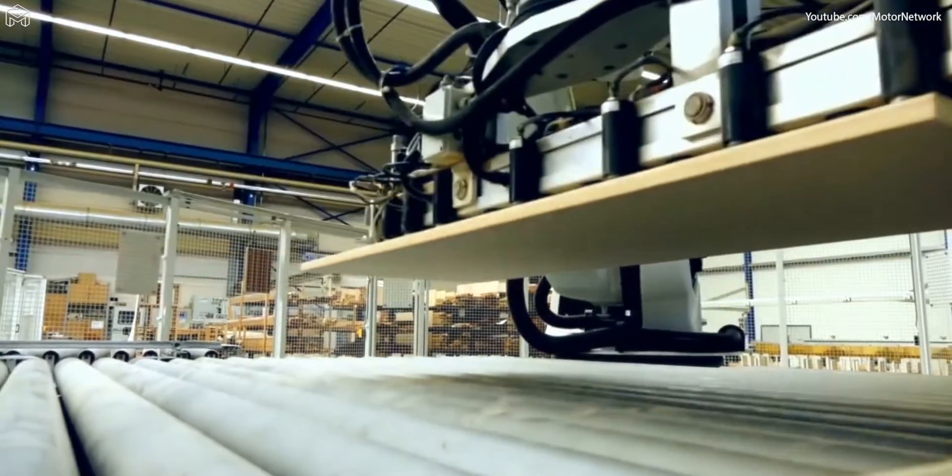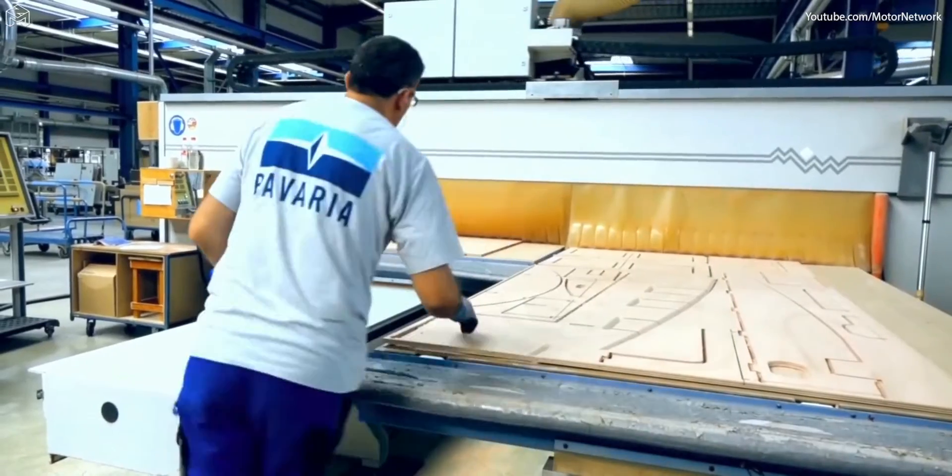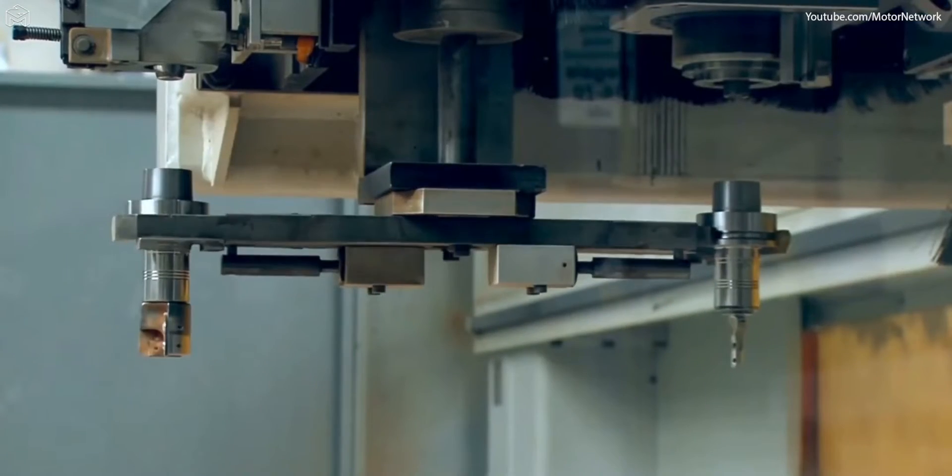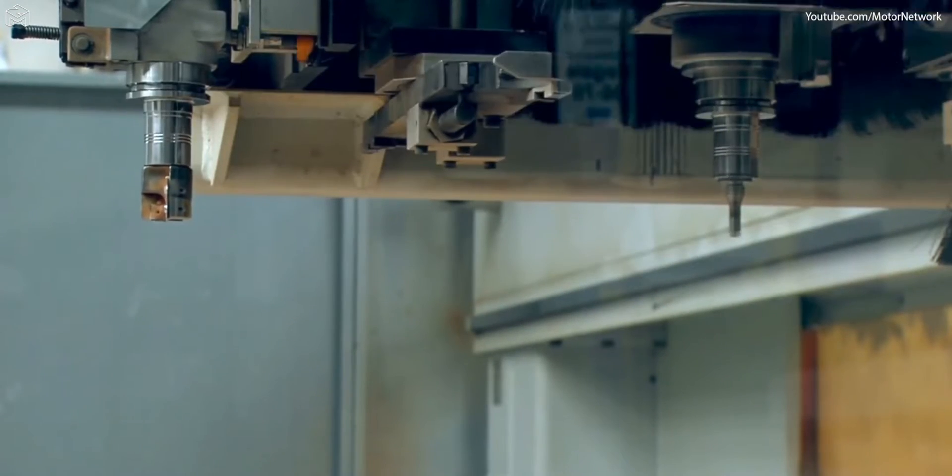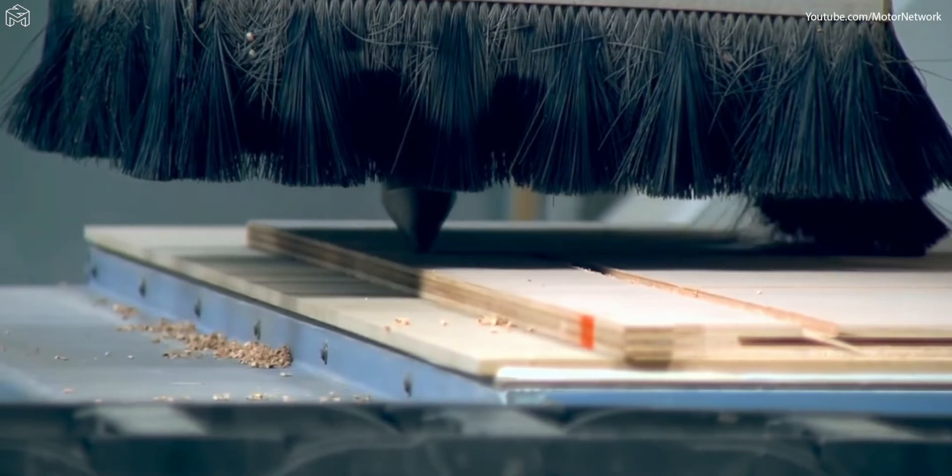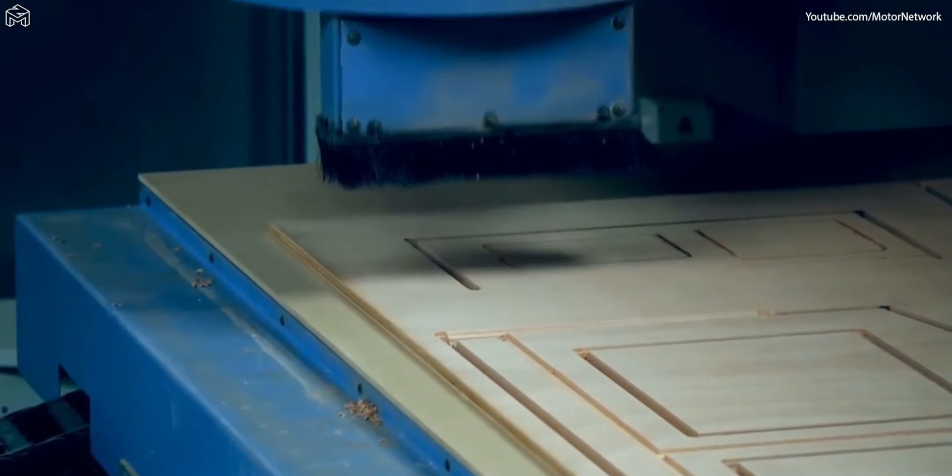Already when the various parts are being cut, care is taken to ensure that the wood grain in the walls, lockers and doors will all match each other later on. To achieve this, all of the elements belonging together are cut from the same sheet. The ultra-modern milling machines guarantee that all of the wooden parts fit exactly to each other later on.